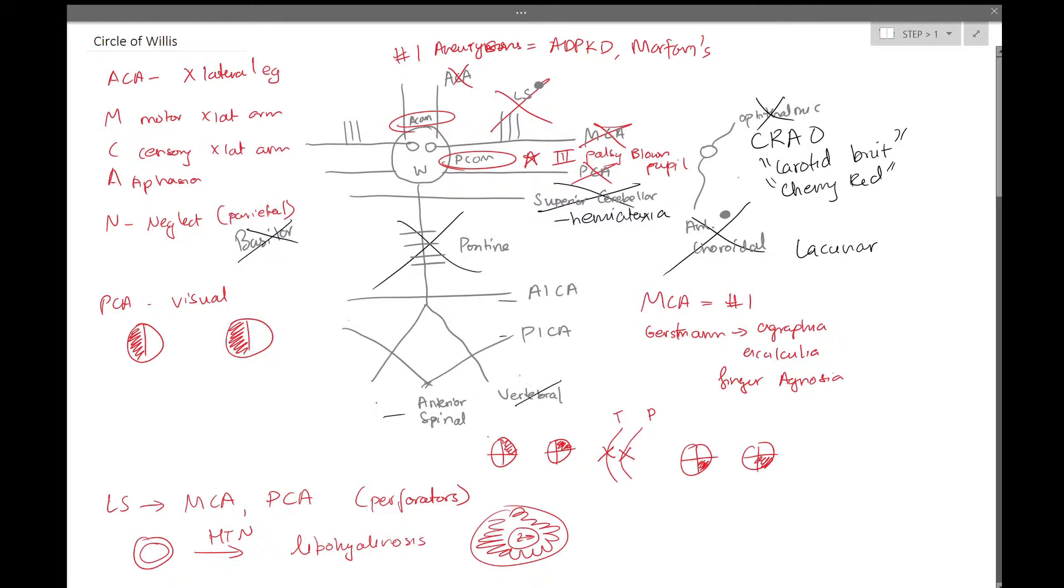Pontine we discussed in the previous video. And then the basilar and vertebral, these are going to be generally very debilitating strokes. So things you'll look for are coma, possibly death, syncope.